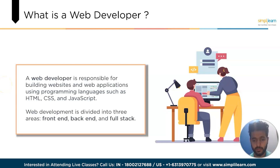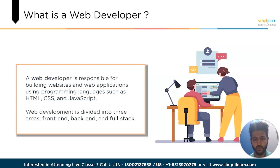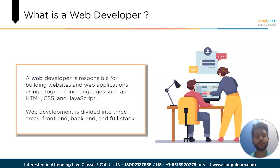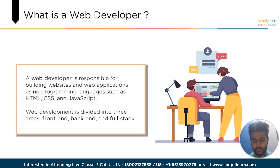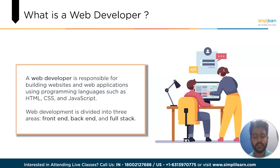There are three main areas of web development: front-end, back-end and full-stack. Front-end web development is concerned with the visible and interactive components of a website which are presented to the users. Back-end development focuses on the underlying infrastructure that supports the front-end, including servers, databases and applications. Full-stack web development encompasses both front-end and back-end development, combining elements from each to create a comprehensive approach.